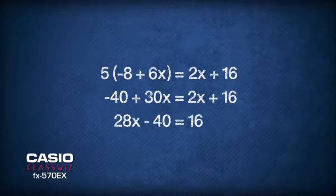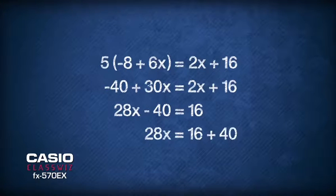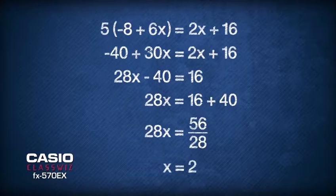Shifting the negative 40 to the right-hand side of the equation gives us 28x equals 56. And finally, cross-dividing solves x equals 2.